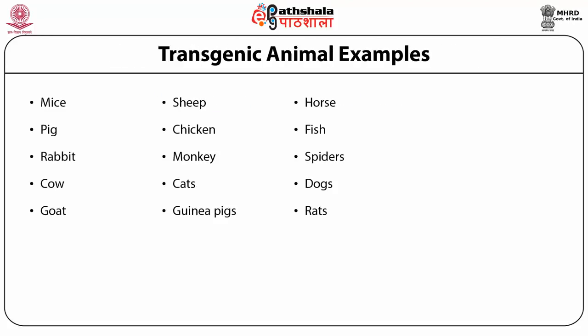Various transgenic animals have been produced. Some examples include mice, pig, rabbit, cow, goat, sheep, chicken, monkey, cat, guinea pig, horse, fish, spider, dog and rats. There is a long list of transgenic animals which have been produced by these techniques.